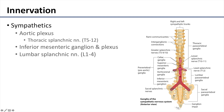The large intestine is going to be innervated very similarly to the remainder of the gut tube. The sympathetics feeding into the enteric nervous system are going to be from the superior mesenteric and aortic plexuses, as well as the inferior mesenteric plexus. These fibers are ultimately sourced from the greater and lesser thoracic splanchnic nerves, as well as lumbar splanchnic nerves coming from L1, L2, L3, and L4.